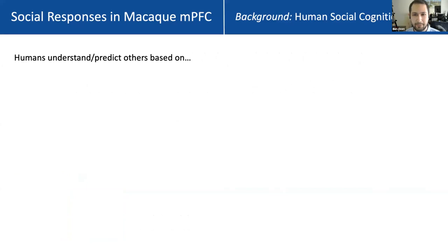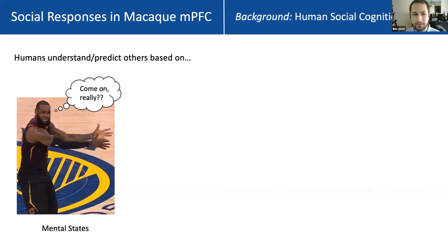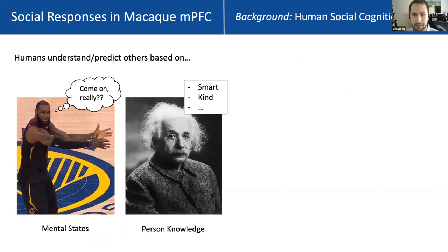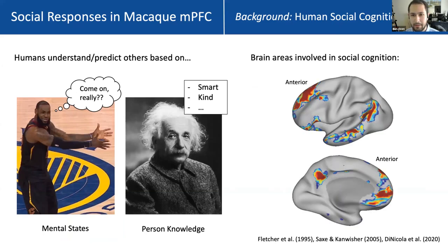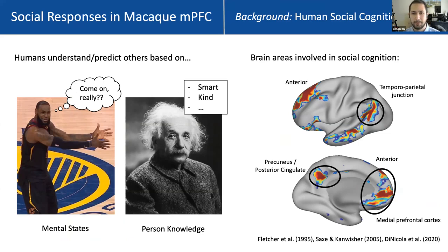As humans, we have a rather sophisticated ability to understand and predict the behavior of other people, and we do so based on their internal mental states, as well as our knowledge about aspects of their personality — personality traits and personal history. These abilities are thought to be supported by a distributed set of brain regions across association cortex, including the temporoparietal junction, precuneus and posterior cingulate cortex, and several regions in the medial prefrontal cortex. These regions fall within a network known as the default mode network or apex network.